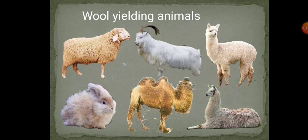Wool is mostly obtained from the fleece of sheep. A sheep's hairy skin has two types of fiber: the coarse beard hairs and the soft under-hairs. Based on the quality of their hairs, they are used for various purposes. There are different varieties of sheep that provide us wool, and the quality of wool differs from breed to breed. The merino breed of sheep provides the finest wool, which is soft and light.